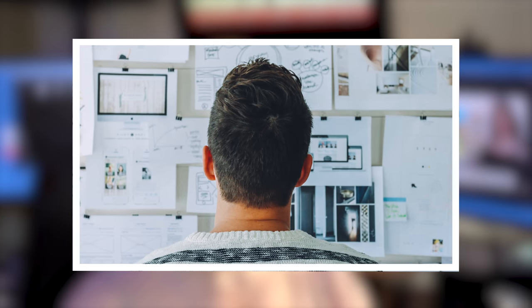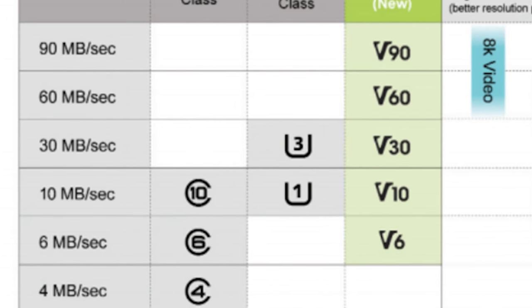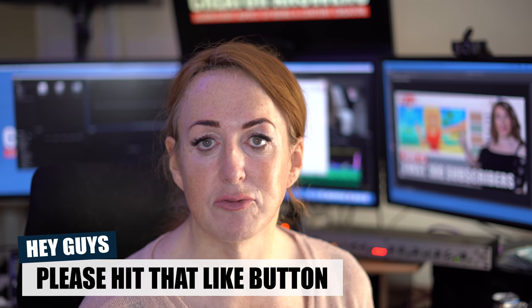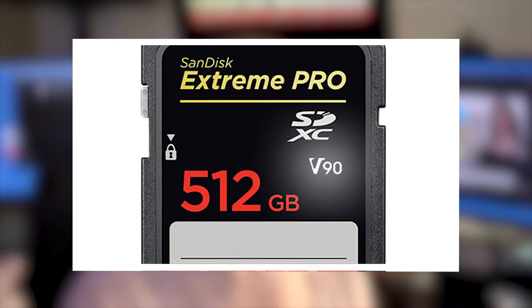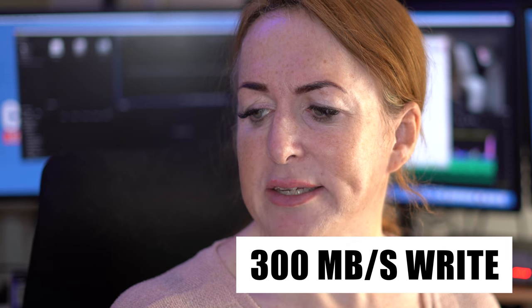Then we have the UHS speed class — not to be confused with the UHS interface class. The UHS speed class comes as U1, U2, or U3, and it's a multiple of 10 megabytes per second, so UHS speed class 3 is 30 megabytes per second. You'll still see it on cards but it's kind of a temporary measure. Finally, the newest is the V rating — the video speed class — which comes as V30, V60, or V90. V90 means 90 megabytes per second. This card for example is a V90 card but still shows U3 and the old class 10 marking to show backwards compatibility, along with 300 megabytes per second read and write stamped on it.